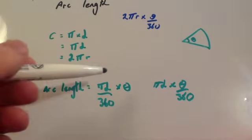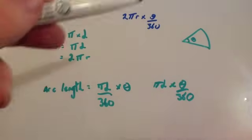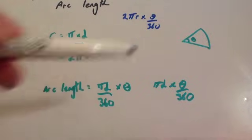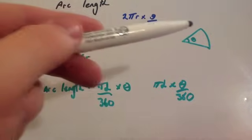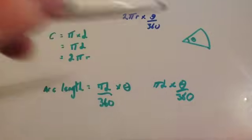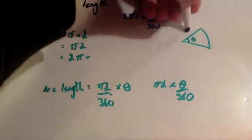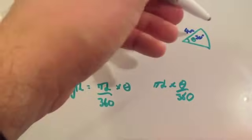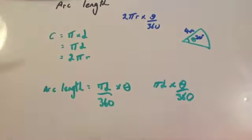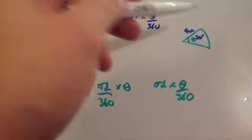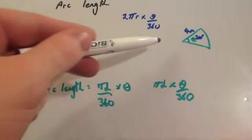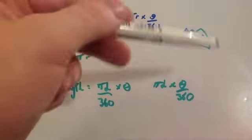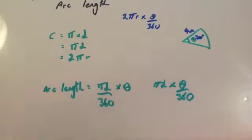So just to recap: you work out the circumference of the whole circle, divide it by 360, and then times by the angle you want - and that gives you the arc length. For instance, if the radius was 4cm and the angle was 30 degrees, to find the arc length you would do pi times diameter - so the diameter would be 8 - then divide by 360, then times by 30.